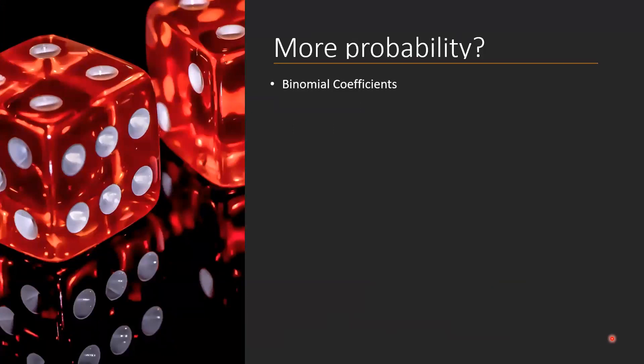Do you want to learn more about probability? The first thing you might want to look into are binomial coefficients — I'll put a link in the video description. You might also want to consider the case with replacement. In our video, every time we took a ball out it was gone. But if you extend this model to also allow replacing balls, you can solve many more problems.